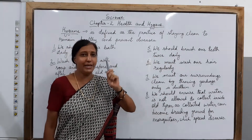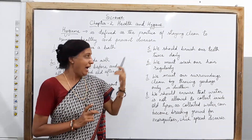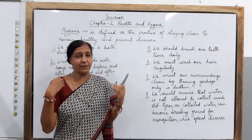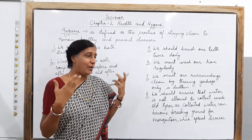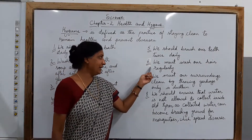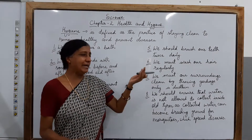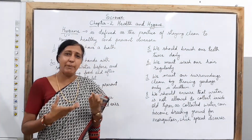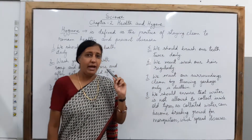We should brush our teeth twice a day — once in the morning and once at night before going to sleep. As you know, food particles get stuck to your teeth and can cause many kinds of cavities, which are very painful. So one should always take care of the teeth by brushing twice a day. Then, children, we must wash our hair regularly. If you are not washing your hair properly, you might get lice, which is very bad for the hair. So at proper intervals you must wash your hair and keep it clean.